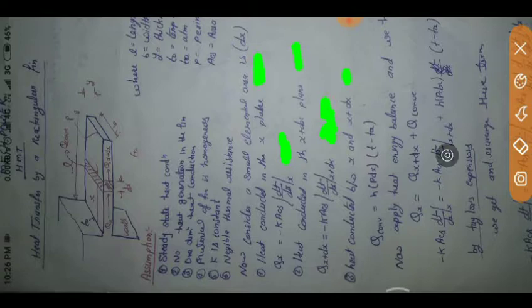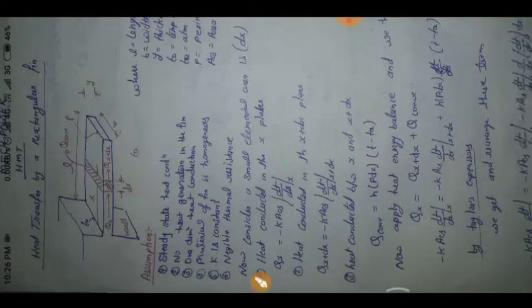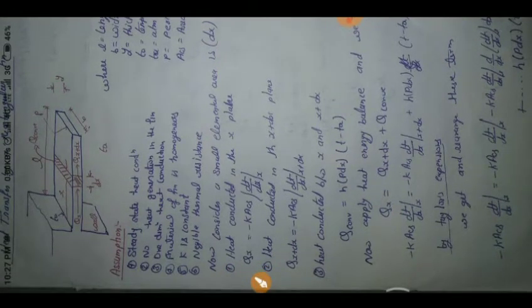For the elemental area, the heat transferred by convection is q_convection equals h·p·dx·(T - Ta), where p is the perimeter of the fin, dx is the elemental length, T is the fin temperature, and Ta is the atmospheric temperature. Applying energy balance, qx equals qx+dx plus q_convection. We substitute the expressions for qx, qx+dx, and q_convection into this equation.